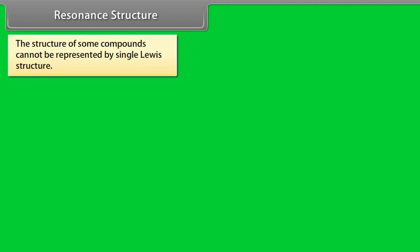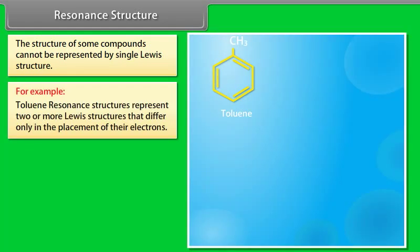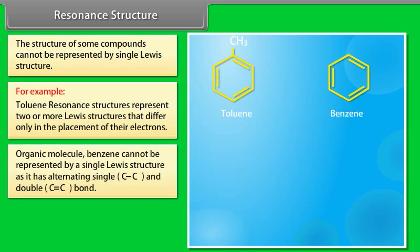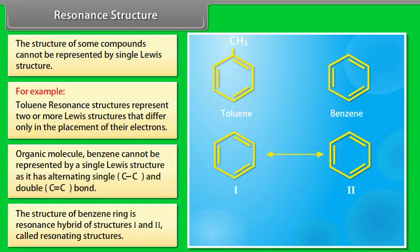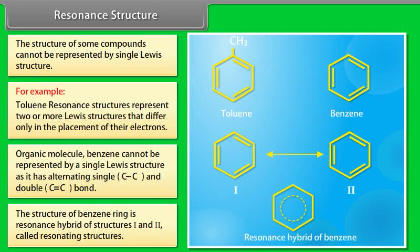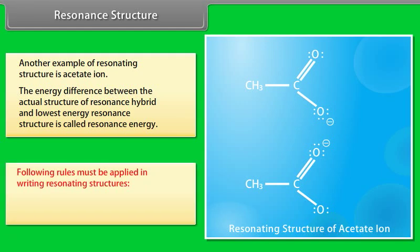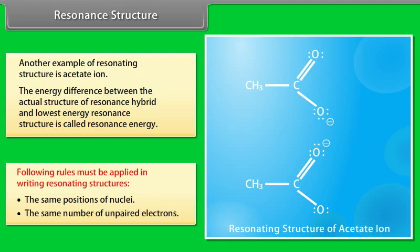Resonance structures: the structure of some compounds cannot be represented by a single Lewis structure — for example, toluene. Resonance structures represent two or more Lewis structures that differ only in the placement of their electrons. Benzene cannot be represented by a single Lewis structure as it has alternating single and double bonds. The structure of the benzene ring is a resonance hybrid of two resonating structures. Another example of resonating structures is the acetate ion. The energy difference between the actual resonance hybrid and the lowest energy resonance structure is called resonance energy. Rules for writing resonating structures require the same positions of nuclei and the same number of unpaired electrons.